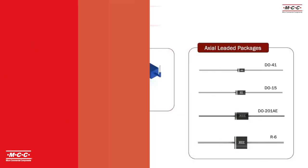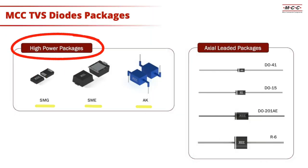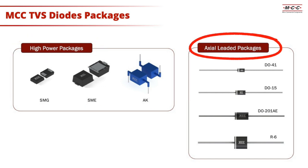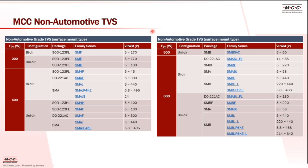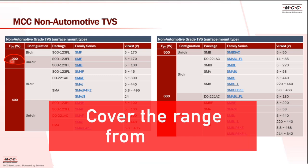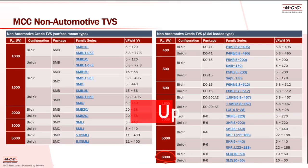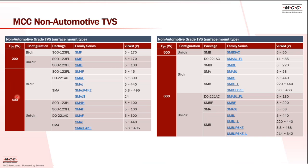We also have high-power packages such as the SMG, SME, and AK series, as well as through-hole leaded packages from DO41 up to the R6 package. For non-automotive TVS, we cover the range from 200 watts all the way up to 6,000 watts peak power, including both surface mount and through-hole leaded types. For example, on the 400W TVS we offer the smallest SOD123 package, and for the popular 600W TVS we have packages including DO221AC, SMB, SMA, and SMBF.